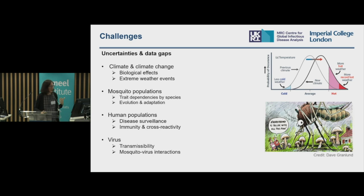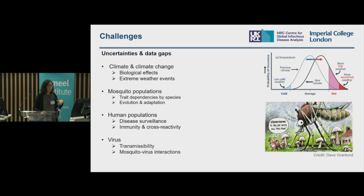A big question is how mosquito populations will evolve and adapt to climate. In terms of human populations, we have limitations in disease surveillance, with gaps especially in Africa and other countries around how well diseases are monitored. We also don't know enough about immunity and cross-immunity and cross-reactivity of these related viruses, and a big question is how the mosquito and the virus will interact going forward under climate and other heat stress.